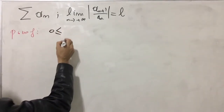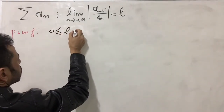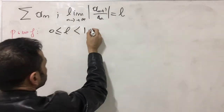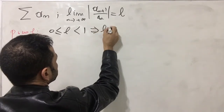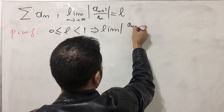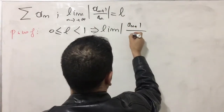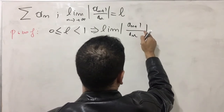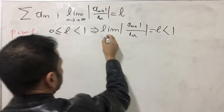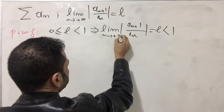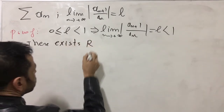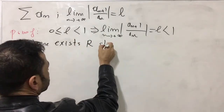I'm going to prove the first case: L is strictly less than 1. We have the limit of the absolute value of the ratio |a_{n+1} / a_n| equal to L, which is strictly less than 1, as n goes to infinity.